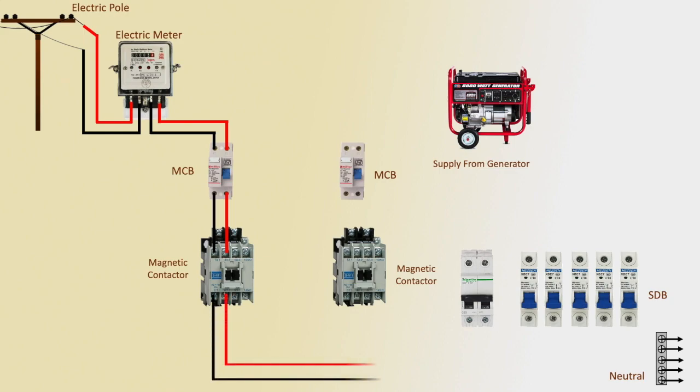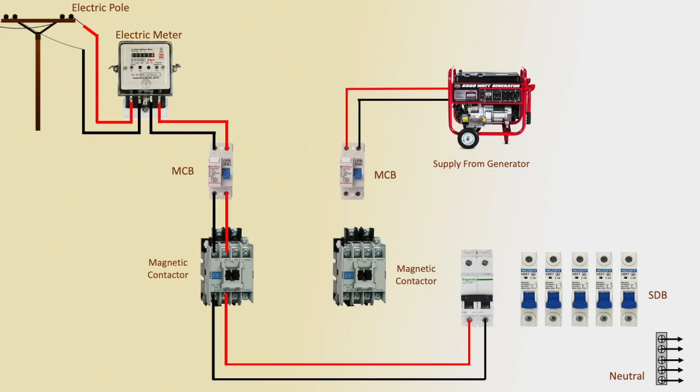L1 and L2 outgoing to the HDB company DP circuit breaker connection. The second line outgoing to the DP circuit breaker input, then outgoing to the second magnetic contactor at L1 and L2.